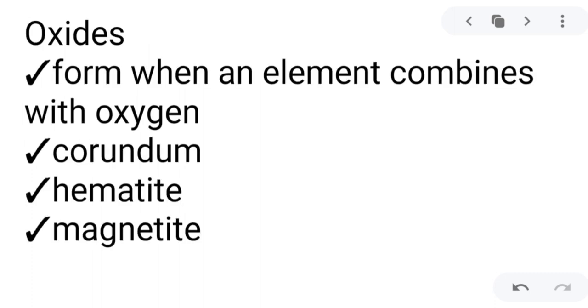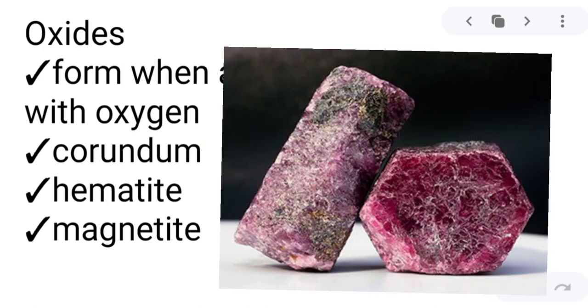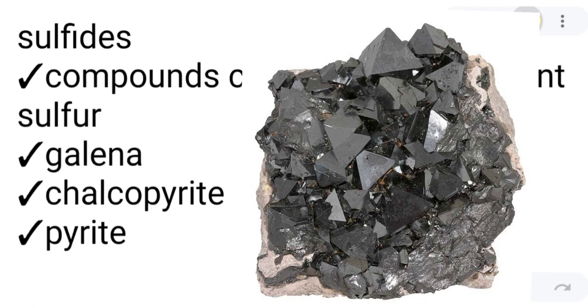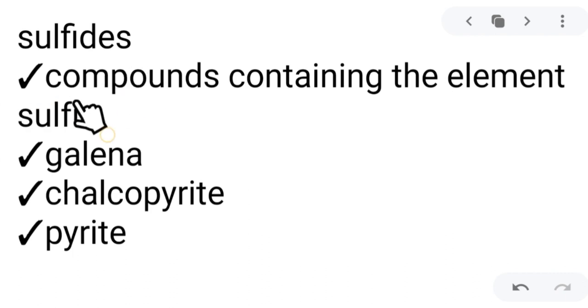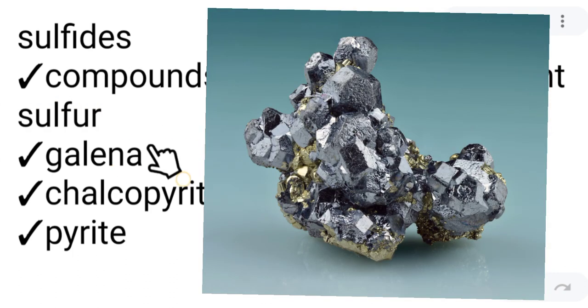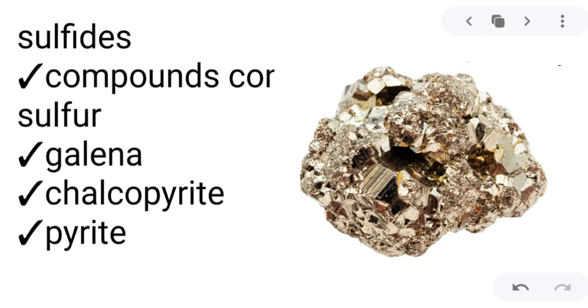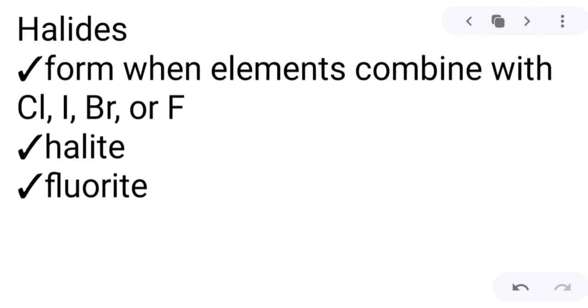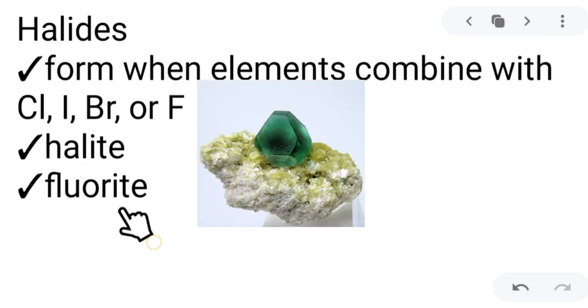Another group of minerals are the oxides, which form when an element combines with oxygen. Examples are corundum, hematite, and magnetite. Then we have sulfides — compounds containing the element sulfur. Examples are galena, chalcopyrite, and pyrite. Then halides — a group of minerals formed when elements combine with chlorine, iodine, bromine, or fluorine. Examples are halite and fluorite.